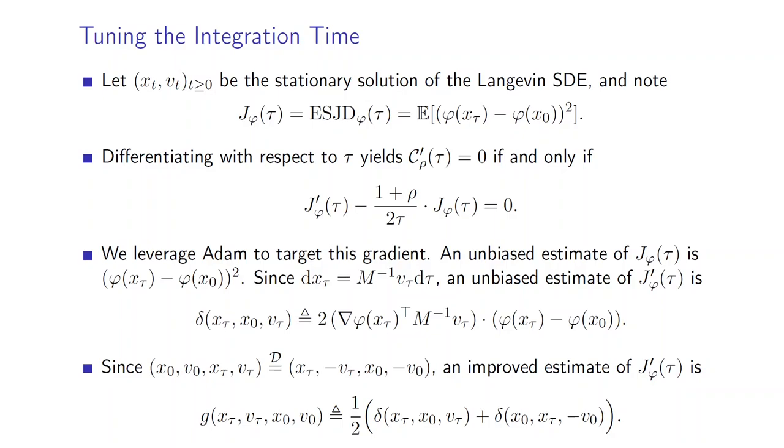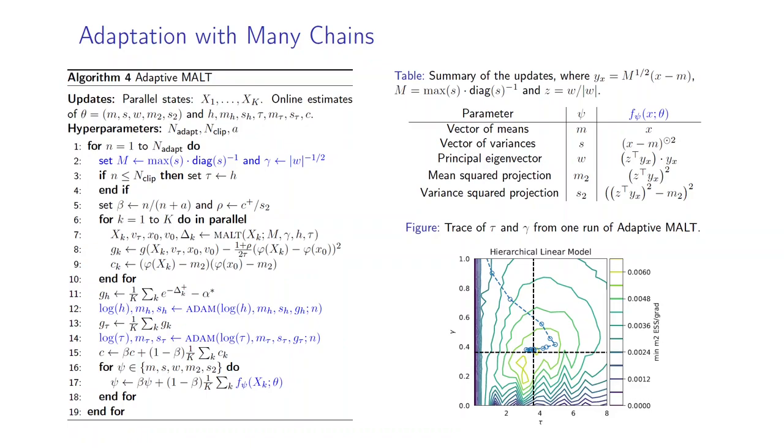By using the fact that x is differentiable in the kinetic Langevin SDE, we can obtain an unbiased estimate of the expected squared jump distance and its gradient, and we can even improve this estimator by reducing its variance using the skew-reversibility property of the kinetic Langevin diffusion.